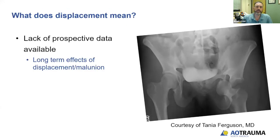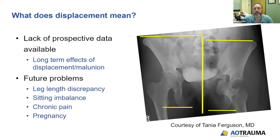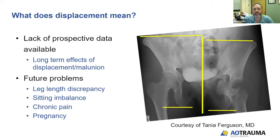And so what does displacement mean? This is a slide from Tanya Ferguson. You can see that you can get distracted with this central acetabular fracture dislocation on the left, but there's a lot of displacement in the pelvic ring. The long-term effects of displacement and malunion in the pelvis is not really well borne out in prospective data. Future problems can be leg length discrepancy, sitting imbalance, chronic pain, and difficulties with pregnancy depending on the size of the child.